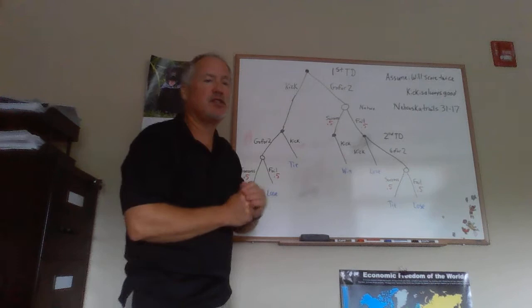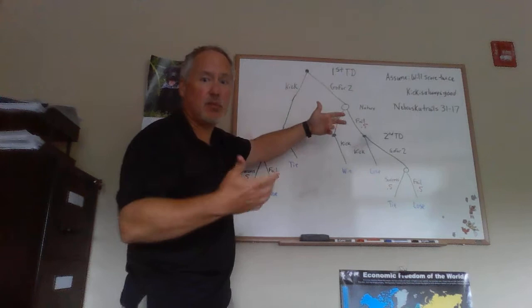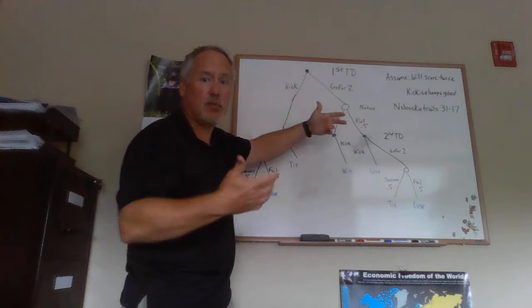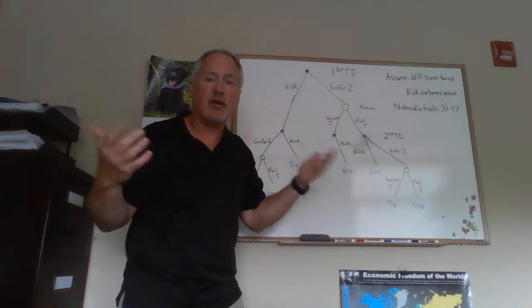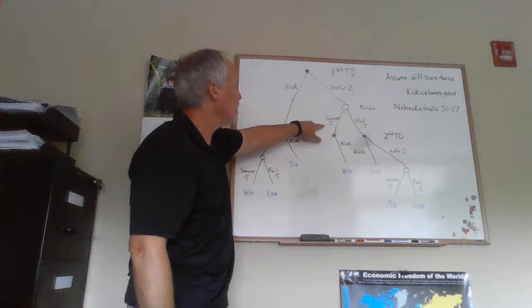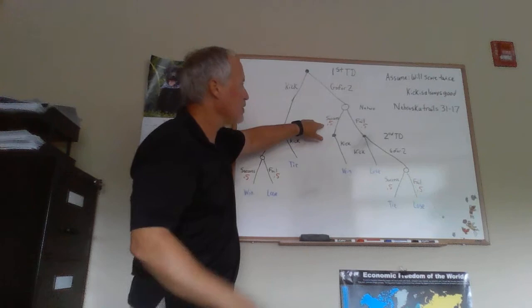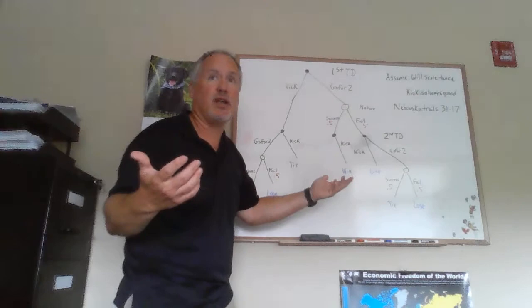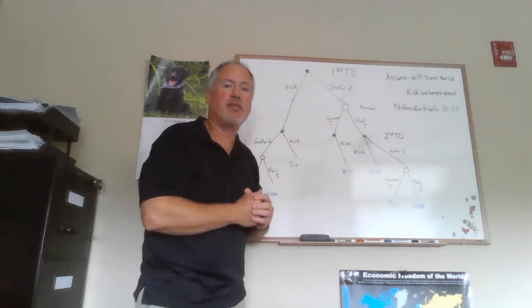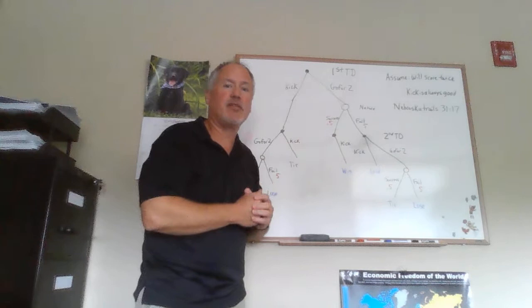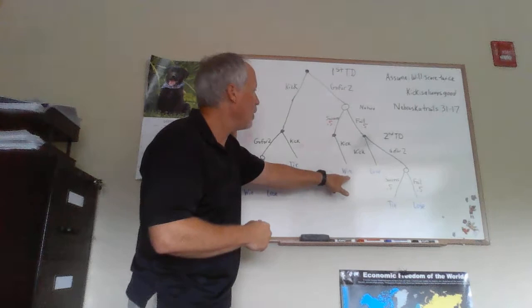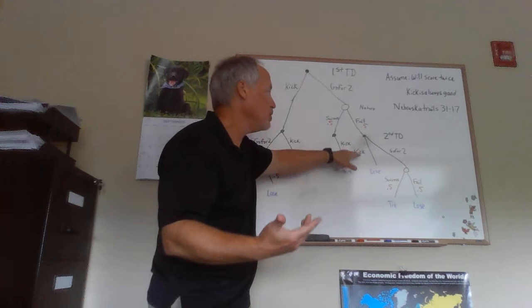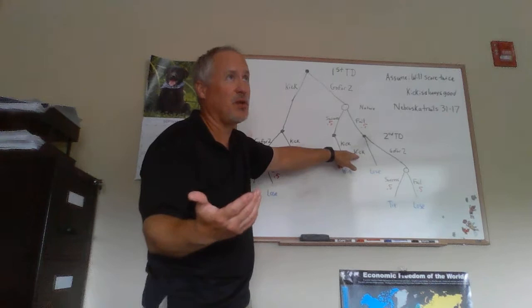Now let's consider what happens after the first TD if you decide to go for two. You go for two and again have that same coin flip — we'll assume anytime there's a two-point attempt, the probabilities are 0.5 and 0.5. You have a 0.5 chance of being successful on the first one and a 0.5 chance of failing. If you're successful on the first one, the score would have been 31–25. You score the second touchdown and have a choice between going for two or kicking. If you kick the extra point, it's 32–31 and you win, so you'd prefer to kick — assuming the extra point is good for sure — and get the win outcome.